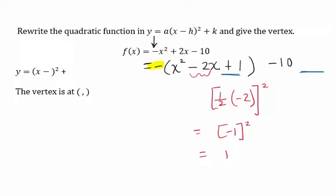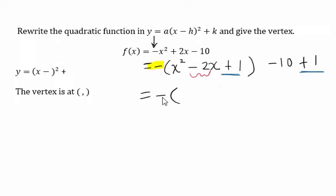Now factor this perfect square, and it factors as x minus 1 times x minus 1, or (x - 1)², and then combine like terms. So minus 10 plus 1 is minus 9.